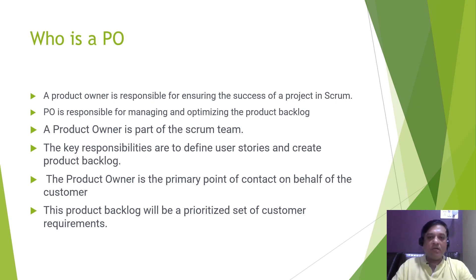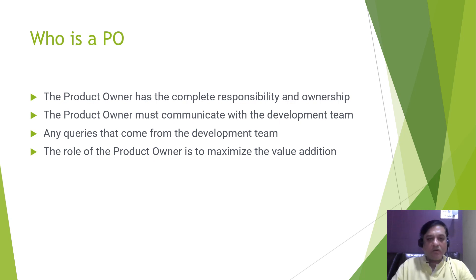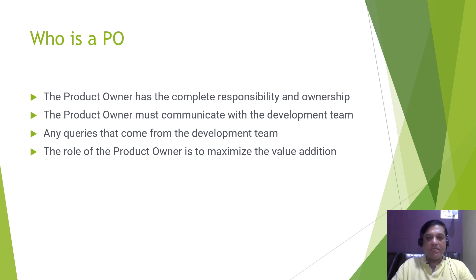The key responsibilities of a product owner are to define user stories and create a product backlog. The product owner is the primary point of contact on behalf of the customer to identify product requirements for the development team. This product backlog will be a prioritized set of customer requirements. The product owner also has complete responsibility for defining and prioritizing user requirements and must communicate with the development team to explain product features to be implemented.